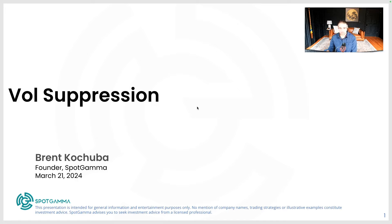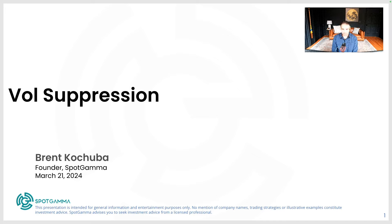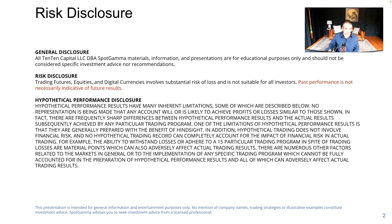Hello, today is April 3rd, and today we're going to talk about volatility suppression. There's been a lot of discussion recently about the effects of call overriding, whether the VIX is acting normally, zero DTEs and the like. We wanted to quantify some of the oddities in volatility and market movement, give an idea of how we think zero DTEs and call overriding are impacting markets, and outline ways these flows could unwind and the ramifications of that.